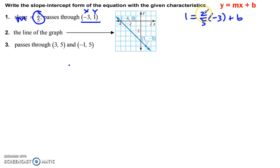Negative 3 times 2 is negative 6, so negative 6 fifths plus b. We're going to add negative 6 fifths to both sides. And 1 is also 5 fifths, so 5 fifths plus 6 fifths is 11 fifths. That's b. And so y equals 2 fifths x plus 11 fifths.